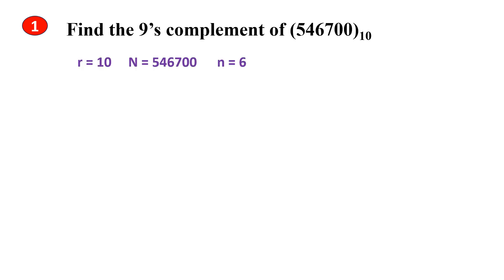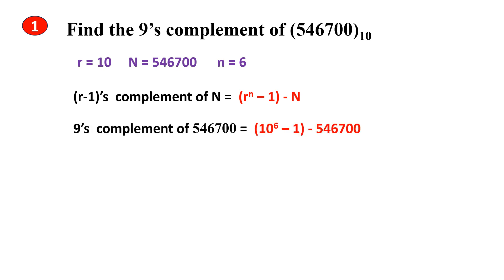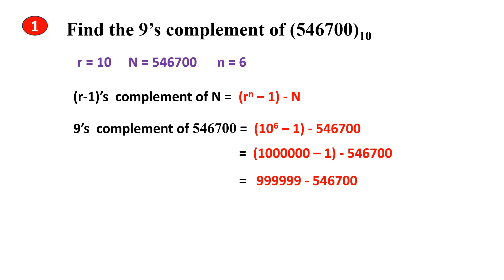Problem 1: Find the 9's complement of the decimal number 546700. The base is 10, the given number N is 546700, and the number of digits is 6. The number has only the integer part, so the formula is r power n minus 1 minus N. Substituting the values: 10 power 6 minus 1 minus 546700. Solving 10 power 6 minus 1 gives 999999, and subtracting 546700 gives the answer 453299.